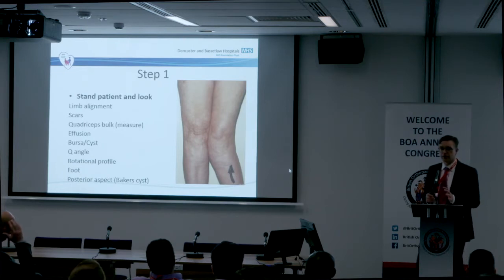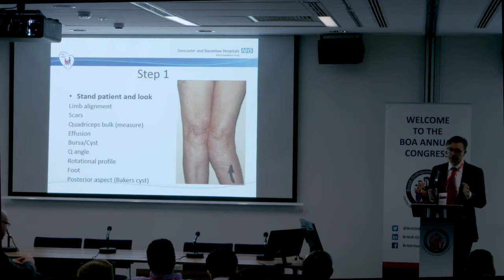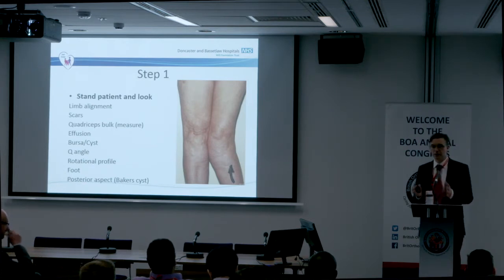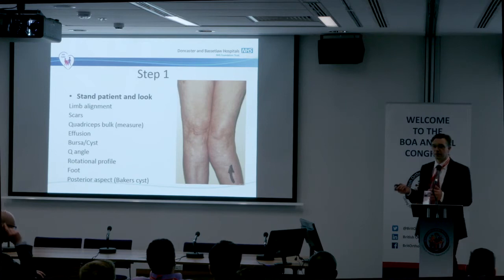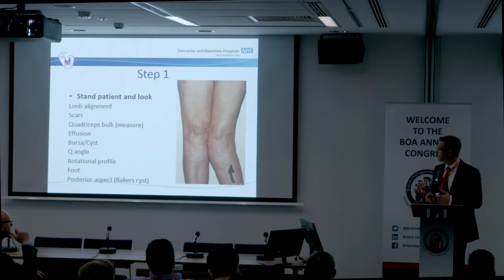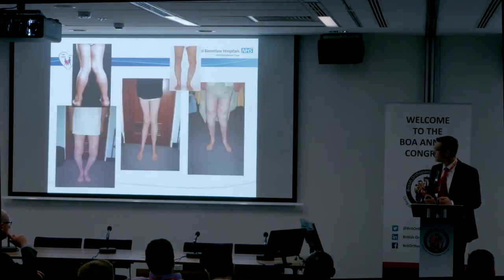We're going to look at the patient from the front. The patient stood up and you're going to assess their lower limb alignment. If they've got a valgus knee, ask them to stand with their knees together. If varus, ask them to stand with their feet together — that accentuates the deformity. If you've got a valgus knee, you can't stand with your feet together. Assess the quadriceps bulk and effusion. Don't forget the back of the knee. Look from the front, from the side and from the back. Don't miss obvious clinical deformities.